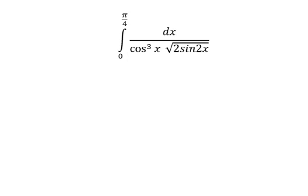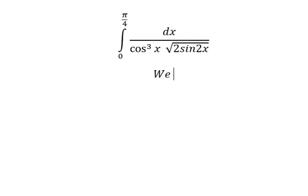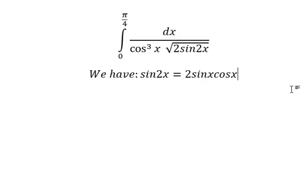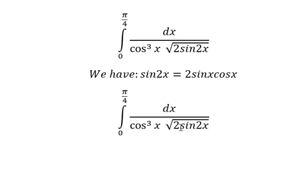Hey guys, welcome back to my channel. Today I will show you how to answer this one. We have the formula in here — that is about two sin x cosine x. So we need to transform this one into this one, so number two and number two we have number four.